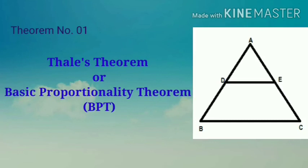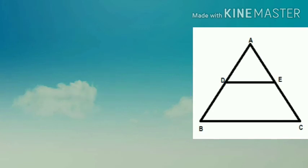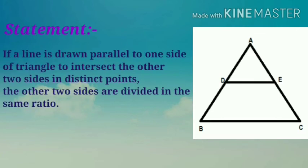Theorem number one: Thales theorem or you can say it as basic proportionality theorem BPT also. Statement: if a line is drawn parallel to one side of a triangle to intersect the other two sides in distinct points.